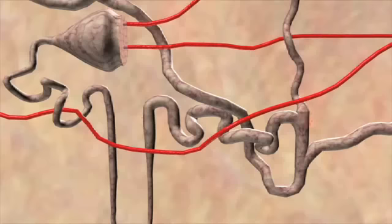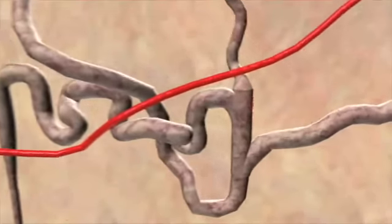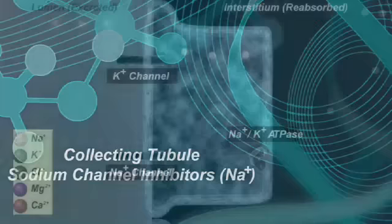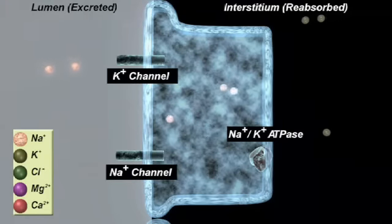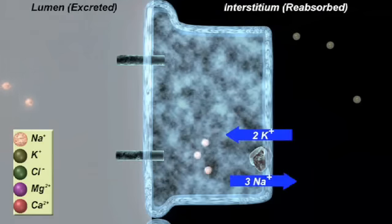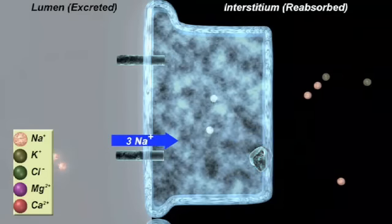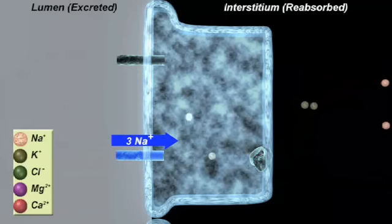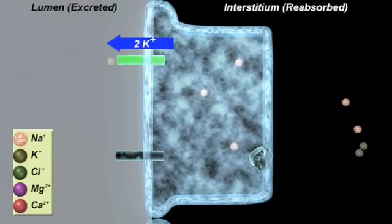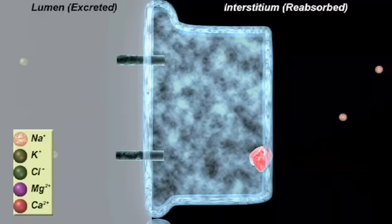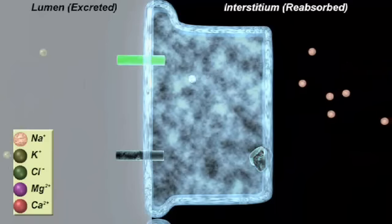The last site for diuretic action is the connecting and collecting tubules. This is where the sodium channel inhibitors act. The transporters present in the collecting tubule are slightly different than at the other sites of the nephron. At this site, the same sodium potassium exchange occurs on the antiluminal membrane. However, the sodium is replaced at this site through the sodium channels on the luminal membrane. Potassium excretion is completed by transport through potassium channels on the luminal membrane. This continuing exchange results in overall sodium reabsorption and potassium excretion.